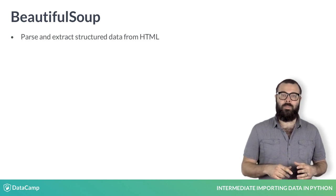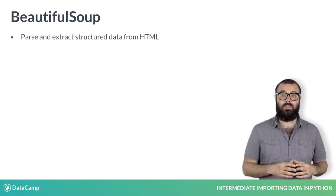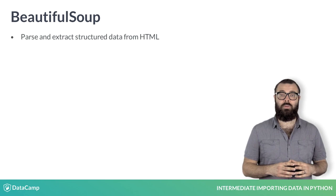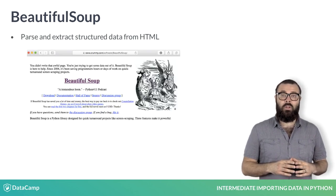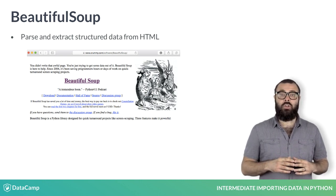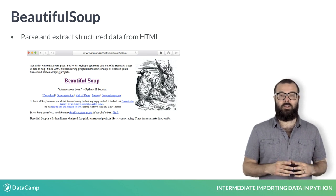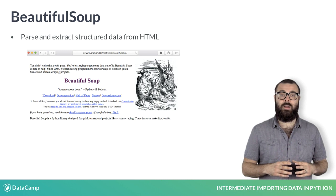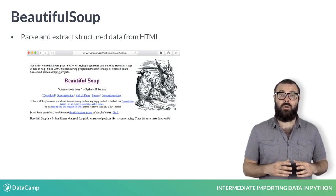In this video and the next few interactive exercises, we'll provide a brief introduction to how you can perform such tasks using the Python package Beautiful Soup. Let's check out the package's website. The first words at the top are: 'You didn't write that awful page. You're just trying to get some data out of it. Beautiful Soup is here to help.' Since 2004, it's been saving programmers hours or days of work on quick turnaround screen-scraping projects.